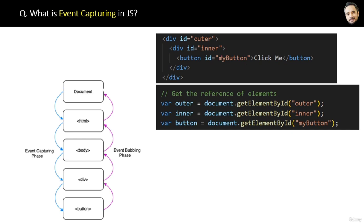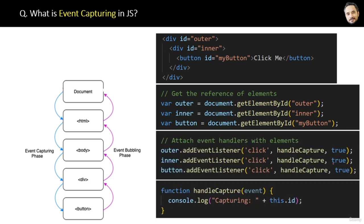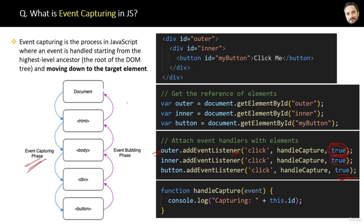The implementation is 90% the same as event bubbling. The only difference is that the third parameter of addEventListener will be true, which enables event capturing. By default this parameter is false, which is why event bubbling occurs. If you set it to true, event capturing is activated. The conclusion is: event capturing is the process where an event is handled starting from the highest-level ancestor and moving down to the target element.